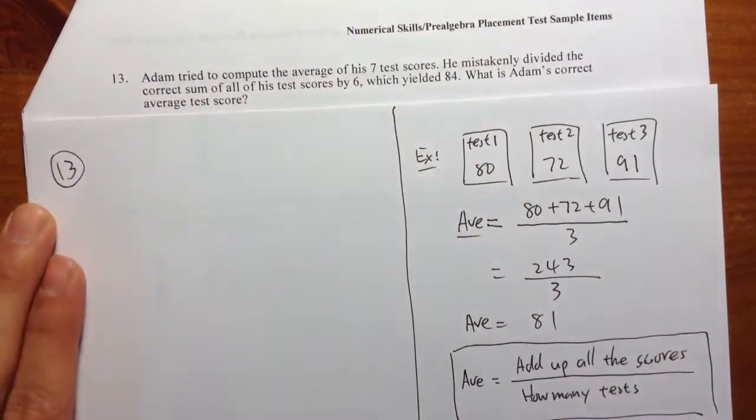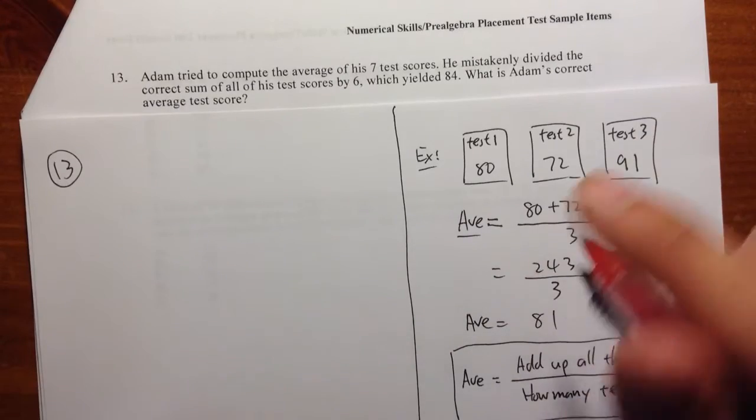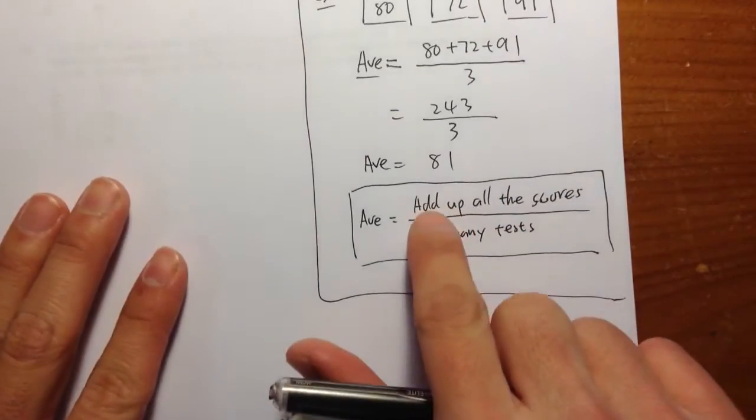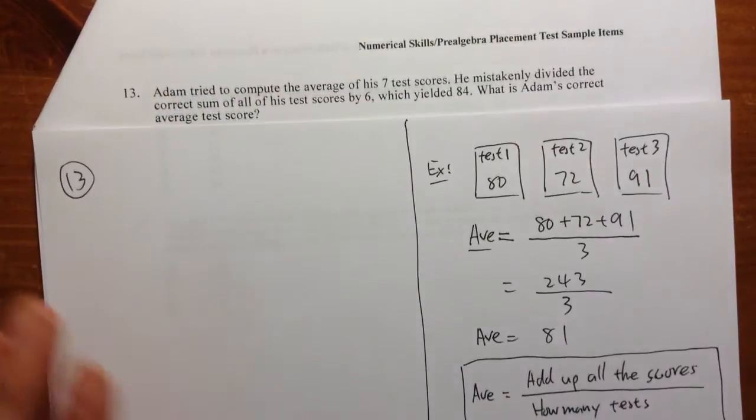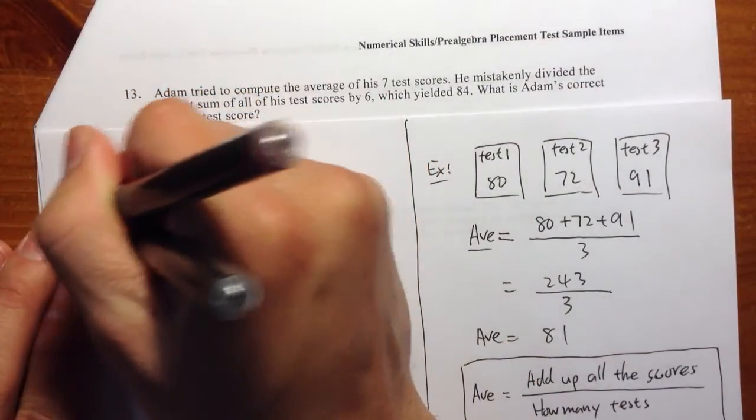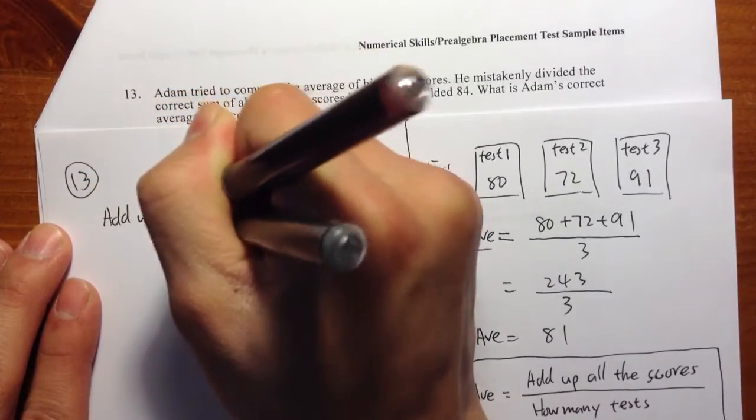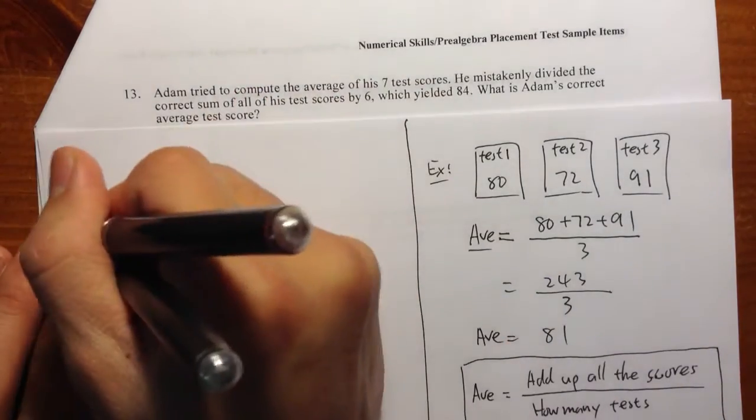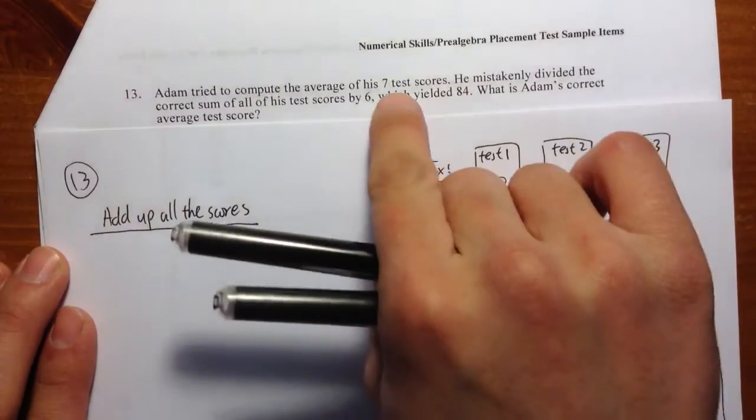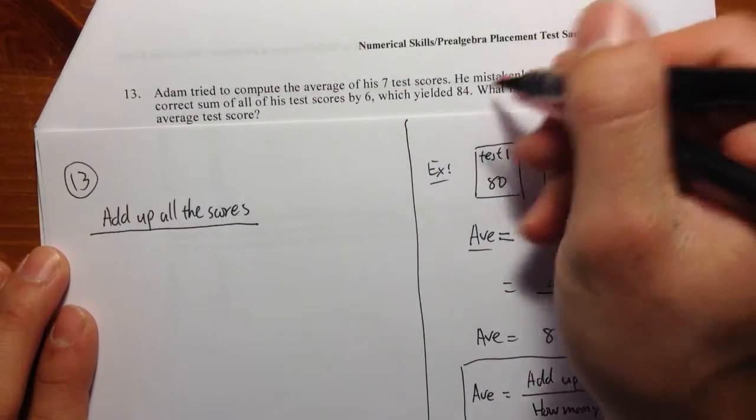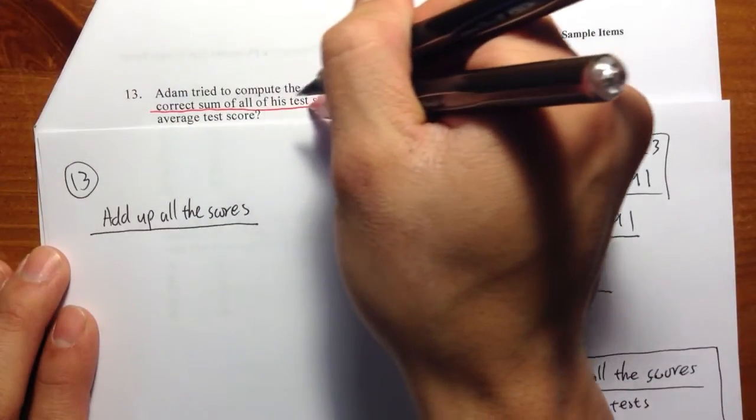So let's see what's going on. He was trying to compute his average. So what did he do first? He must add up all the test scores. That should be his first step. So let me write it down. Add up all the scores. And then he wants to divide by how many tests that he took. He took 7. But however, it says that he mistakenly divided the correct sum by 6.